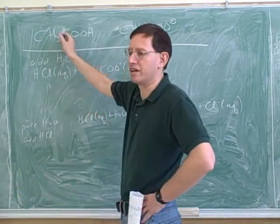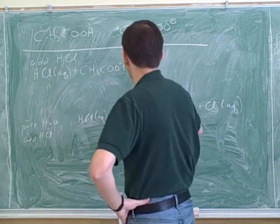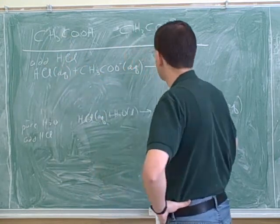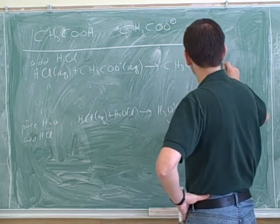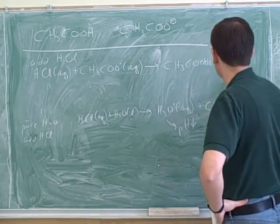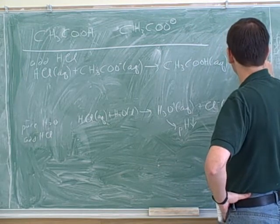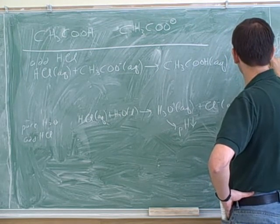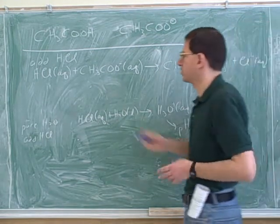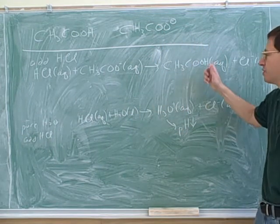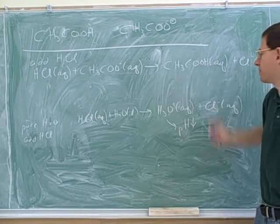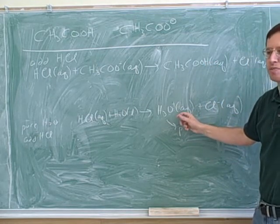We know that acids react with bases, not other acids. So this is going to react with the base. Basically, it's going to protonate this acetate and make the acetic acid. Well, notice, what did we not produce? We didn't produce hydronium. And therefore, we're not going to have that decrease in pH.